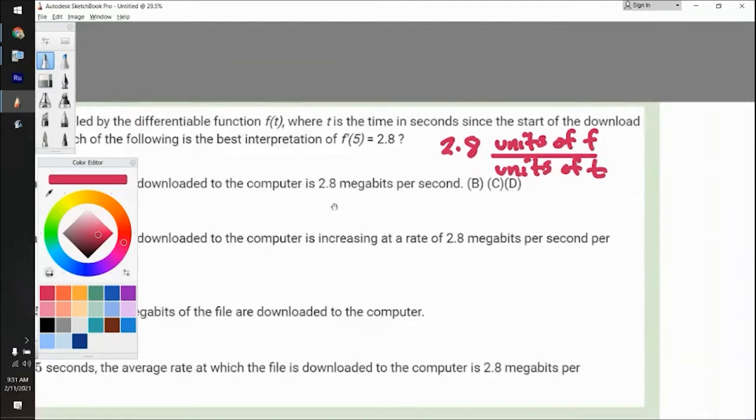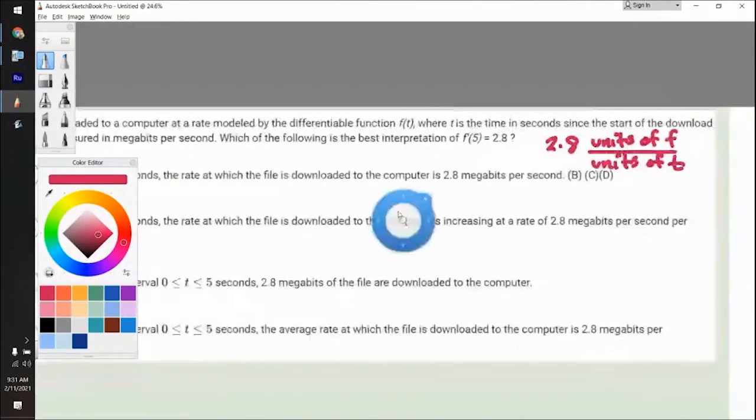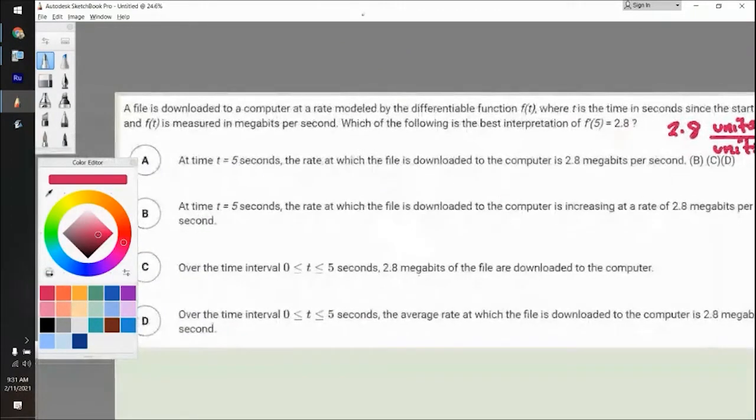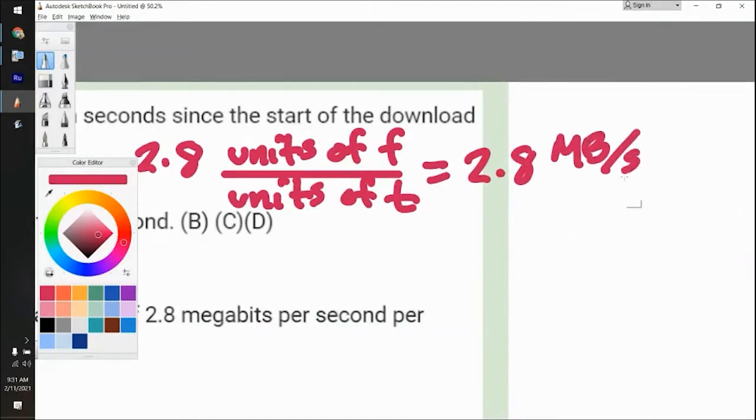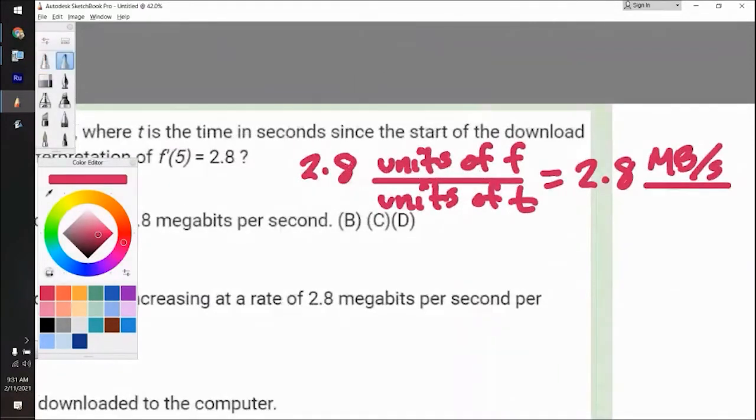Well, luckily, the problem actually tells you what the units of f are. They are, where does it say? Right here. It's measured in megabits per second. So I'm going to say that this is equal to 2.8 megabits per second divided by the units of time. And if you notice right here, it says the units of time is in seconds.